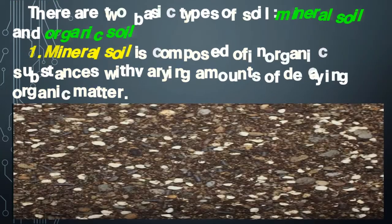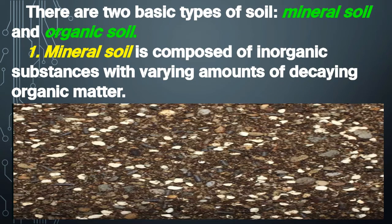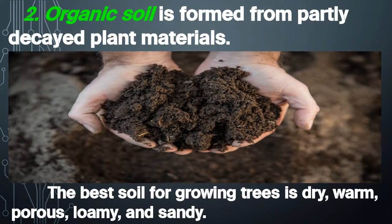Nutrients such as nitrogen, potassium, and phosphorus are absorbed by the roots of the tree for the plant to grow. There are two basic types of soil: 1) Mineral soil, which is composed of inorganic substances with varying amounts of decaying organic matter; and 2) Organic soil, which is formed from partly decayed plant materials.